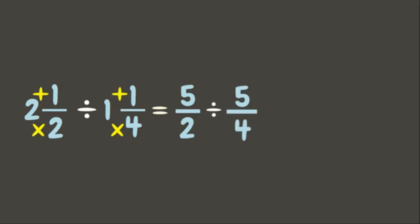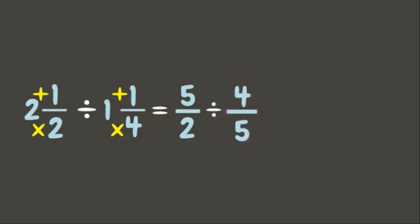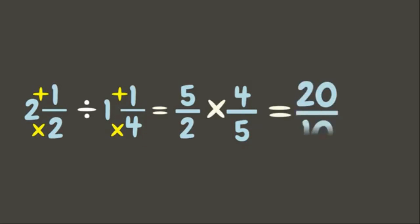Now let's get the reciprocal of the divisor, change division into multiplication, and multiply. Five times four is twenty; two times five is ten. Let's simplify our answer. Since this is an improper fraction, let's divide: twenty divided by ten is two. Our final answer is two.